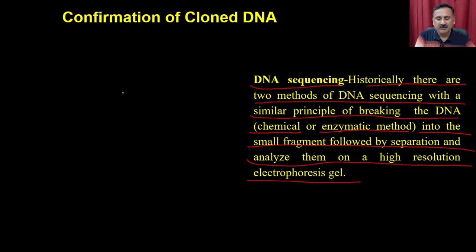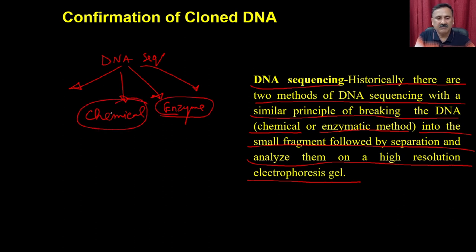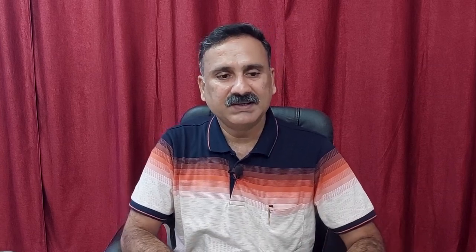Verification of the clone can be done with the help of DNA sequencing — you can sequence the clone to know whether the gene of interest or the fragment is present. Confirmation of the cloned DNA can be done by DNA sequencing. Historically there are two methods of DNA sequencing with a similar principle of breaking the DNA — either the chemical method or the enzymatic method — into small fragments, followed by separation and analysis on a high-resolution electrophoresis gel.